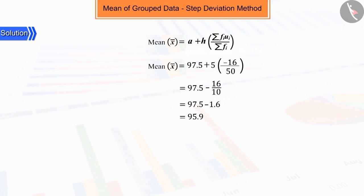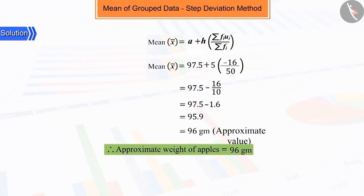So we can say that the nearest mean weight of apples is 96 grams.